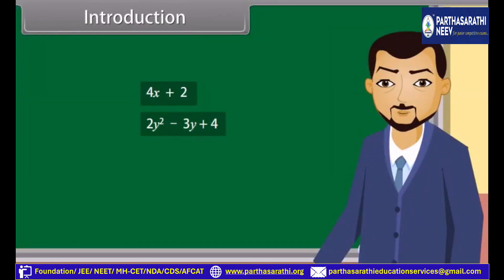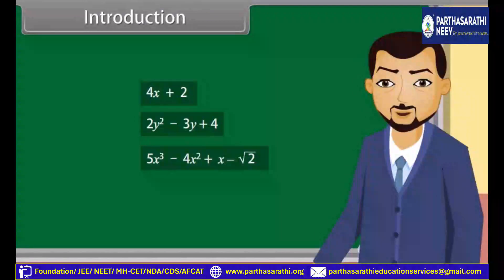Similarly, 2y squared minus 3y plus 4 is a polynomial in the variable y of degree 2, and 5x cubed minus 4x squared plus x minus square root 2 is a polynomial in the variable x of degree 3.